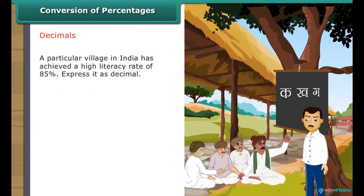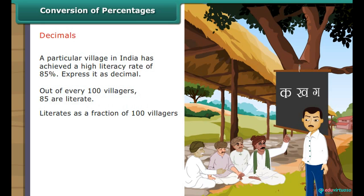A particular village in India has achieved a high literacy rate of 85%. Express it as a decimal. Out of every 100 villagers, 85 are literate. Literates as a fraction of 100 villagers equals 85 upon 100, which equals 0.85. Therefore, 85% expressed as a decimal is 0.85.